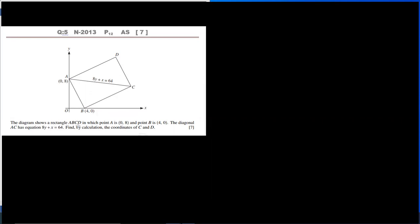The question is: diagram shows a rectangle ABCD in which point A is 0,8 and point B is 4,0. Diagonal AC has equation 8Y plus X is equal to 64. Find by calculation the coordinates of C and D.